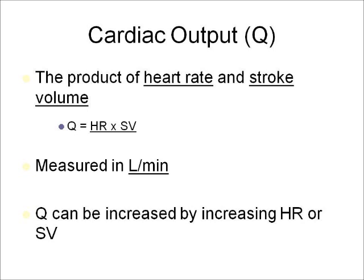Cardiac output, Q, is the product of heart rate and stroke volume. Q equals HR times SV, and it's measured in liters per minute. Q can be increased by increasing heart rate or stroke volume.